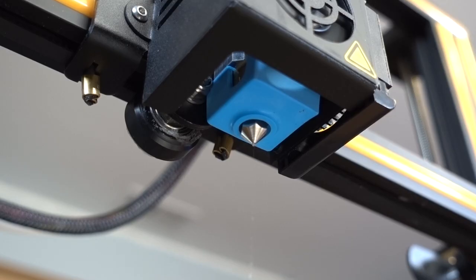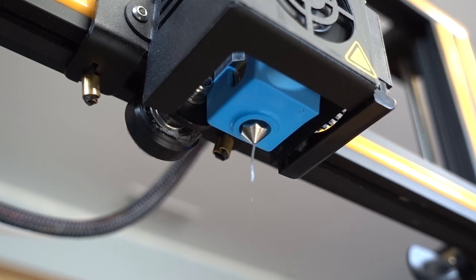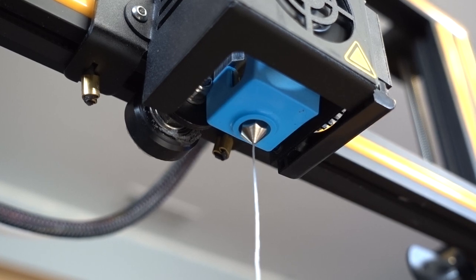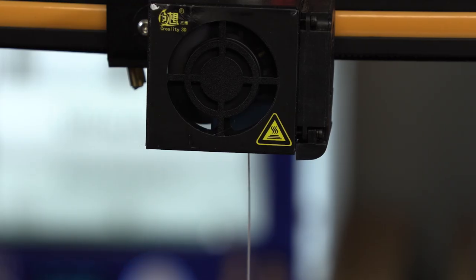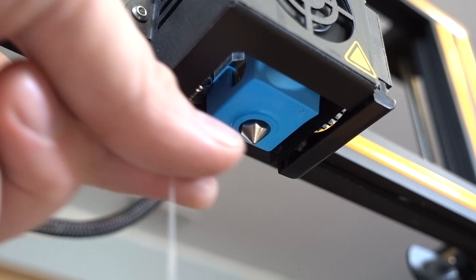Now that you're done, you should test your work. Go ahead and preheat the printer to the temperature of the filament you want to test with. Feed the filament through, and verify it's extruding out the nozzle. Once you see filament coming out the nozzle, give yourself a pat on the back, because you're done, and ready to print all the things.